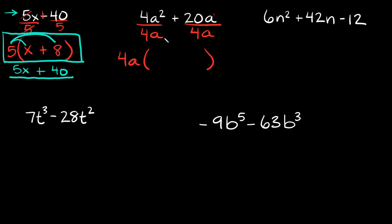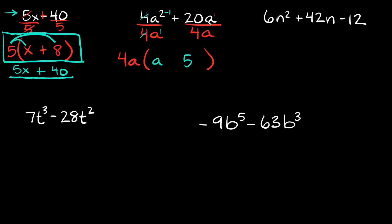So the greatest common factor is 4a. Pull that out, draw your parentheses, and simplify. For 4a squared divided by 4a: the 4's cancel, and then a squared over a — since we're dividing exponents with the same base, we subtract them: 2 minus 1 equals 1, so we're left with just 'a'. Then 20a divided by 4a: 20 divided by 4 is 5, and the single 'a' on top and bottom cancel. Bring the plus sign down. The answer is 4a times the quantity a plus 5.